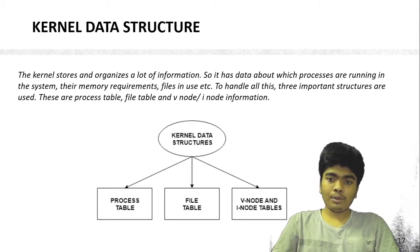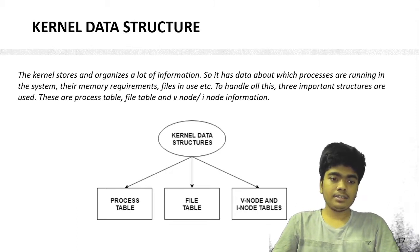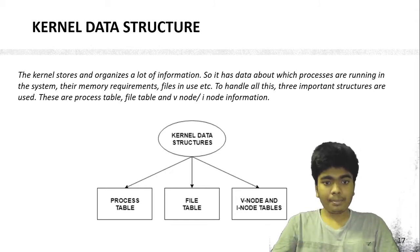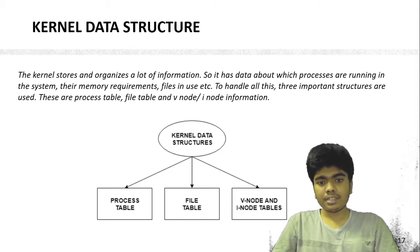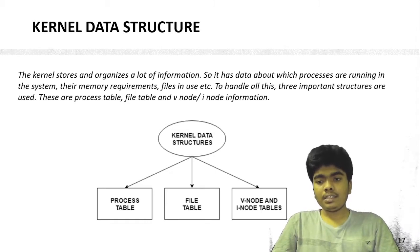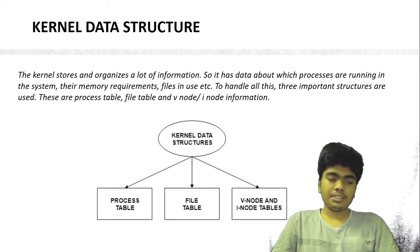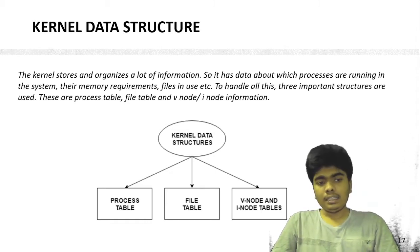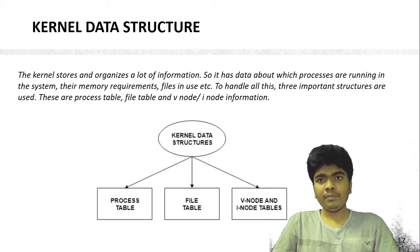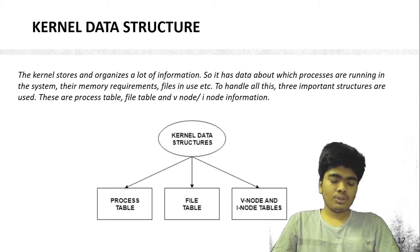The kernel stores and organizes a lot of information — data about which processes are running in the system, their memory requirements, files in use, etc. To handle all these, three important structures are used: the process table, file table, and V-node and I-node information.